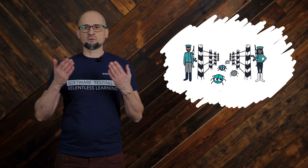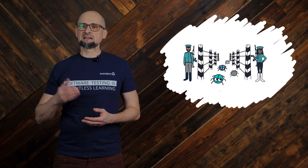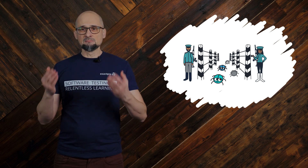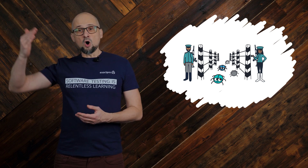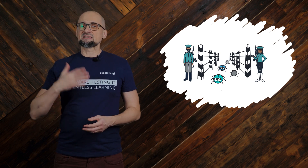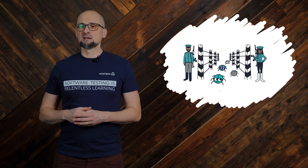The behavior at the boundaries of equivalence partitions is more likely to be incorrect than behavior within the partitions. It is important to remember that both specified and implemented boundaries may be displaced above or below their intended positions, may be omitted altogether, or may be supplemented with unwanted additional boundaries. BVA will reveal almost all such defects. This technique can be applied at all test levels and is generally used to test requirements that call for a range of numbers. Boundary coverage is measured as the number of boundary values tested divided by the total number of such values, normally expressed as a percentage.